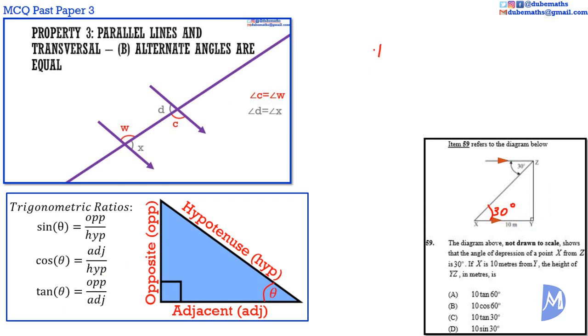Thus, tan 30 degrees equals opposite YZ over adjacent 10. We multiply by 10 to make YZ the subject of the formula. Tan 30 degrees multiplied by 10 is the same as 10 multiplied by tan 30 degrees. 10 tan 30 degrees.